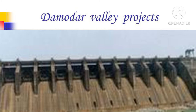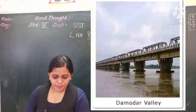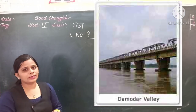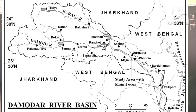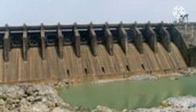First, let's discuss the Damodar Valley Project. It is a multipurpose project built on the river Damodar, which flows through West Bengal and Jharkhand. A number of dams have been constructed on the river Damodar to provide water for irrigation, power, navigation, and flood control in these two states.